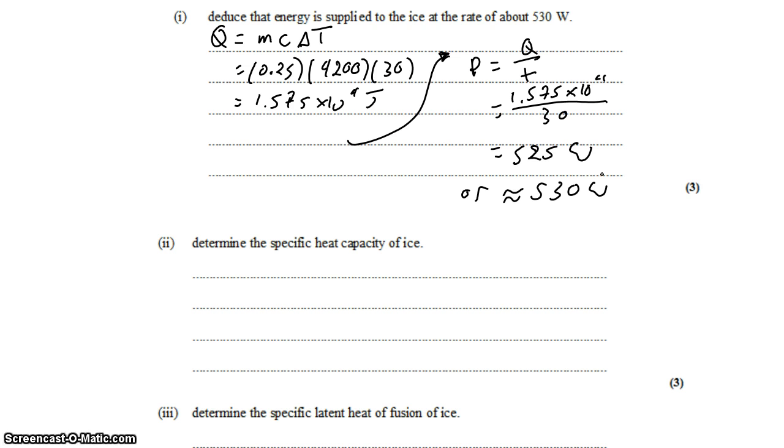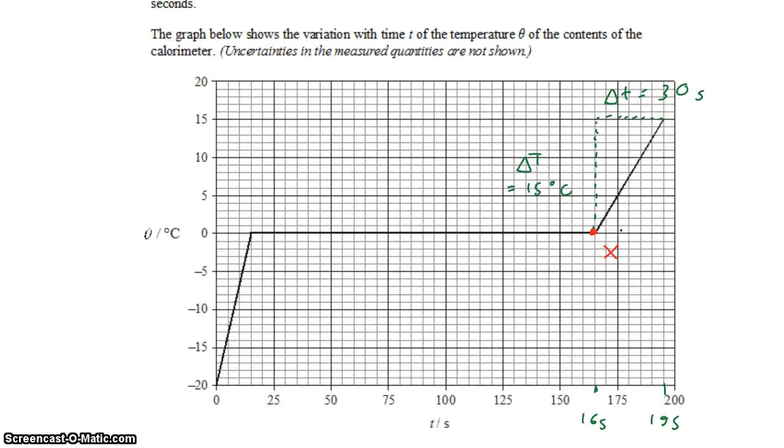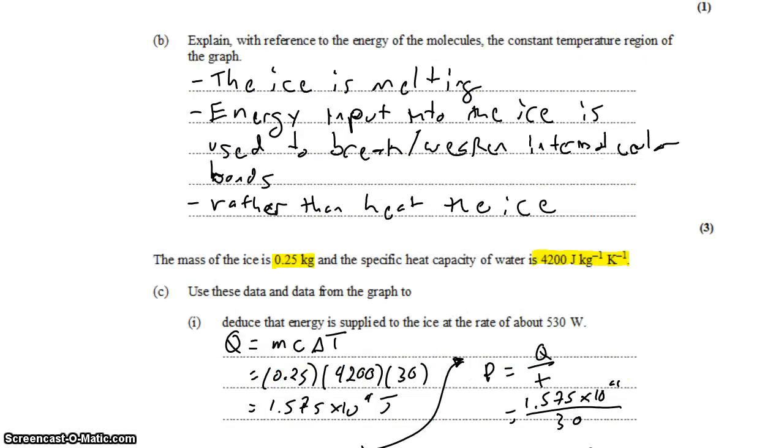Next up, we want to determine the specific heat capacity of the ice. But actually, before we do that, I just want to come back to this graph and point out one thing. I needed to use the slope of this graph, basically. And anytime I want to read the slope from a graph, I want to use as much of the graph as possible. So I chose to use a full triangle rather than taking a small change in time like one second and a small change in temperature, maybe one degree. I'll get a much more accurate result by using the full biggest triangle that I can.